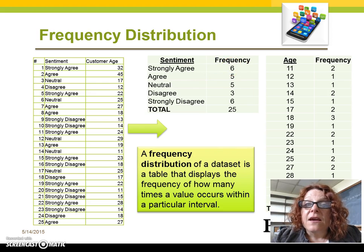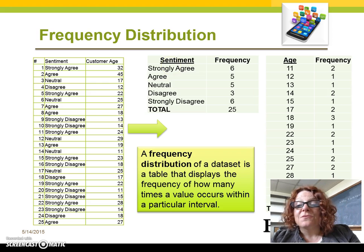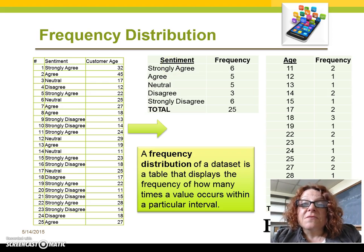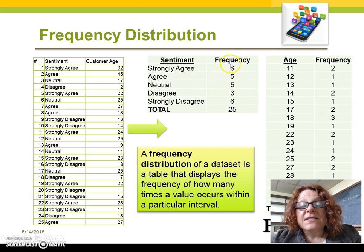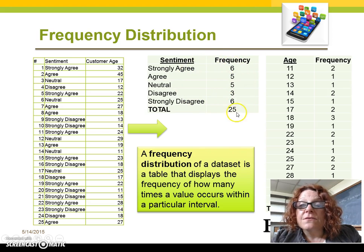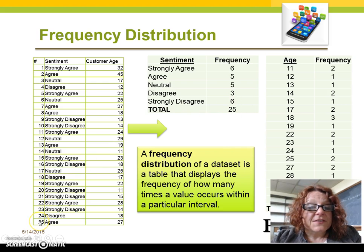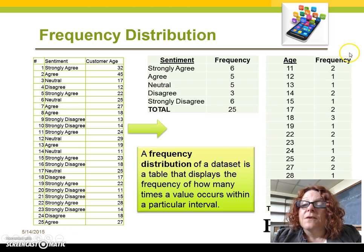Now we can do the same thing to see how many customers agree that our app is really great, how many customers are neutral, or disagree, or strongly disagree. And we will come up with what is called a frequency count. This is a frequency distribution table. All of our frequency counts usually total up to the number of transactions that we have in our data set. We can do the same thing with our age attribute.